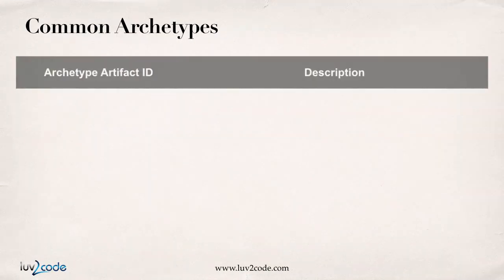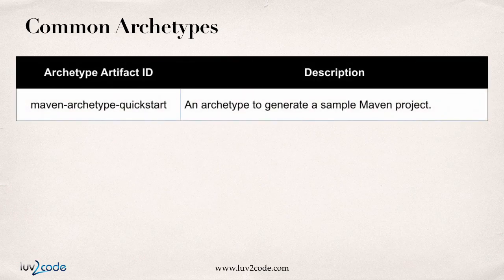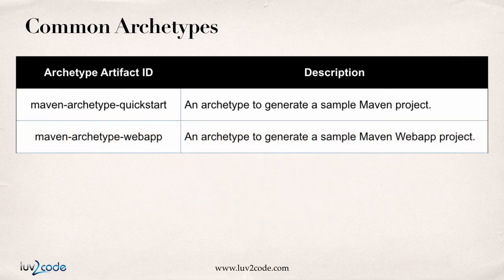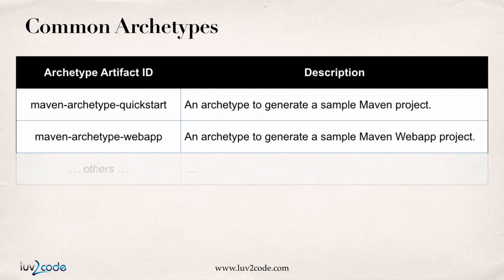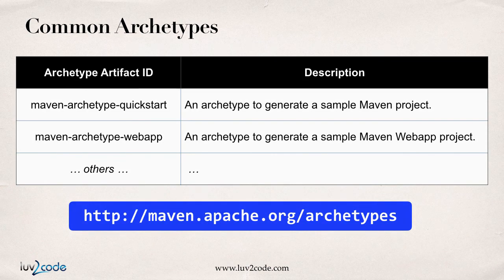Here's a list of some common archetypes. You have the Maven archetype quickstart, which will generate a sample Maven project — this is good for standalone projects. They also have the Maven archetype-webapp, which generates a sample Maven web app — great for starting web projects. There are other archetypes available at maven.apache.org/archetypes, but the ones listed here are the most common.